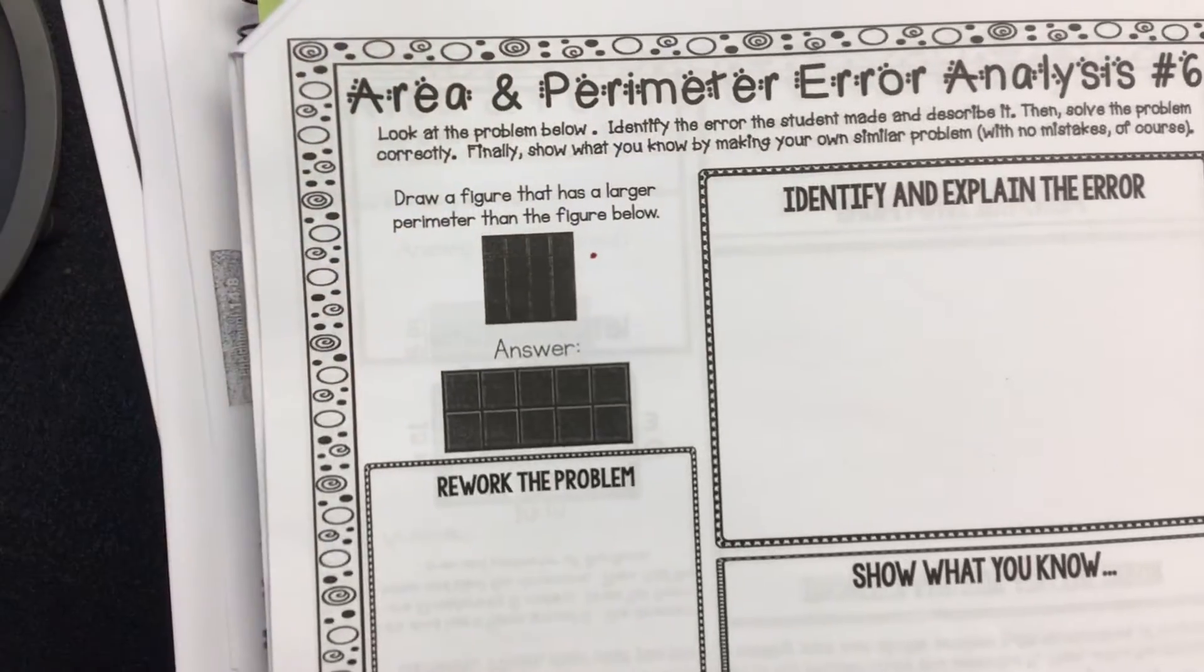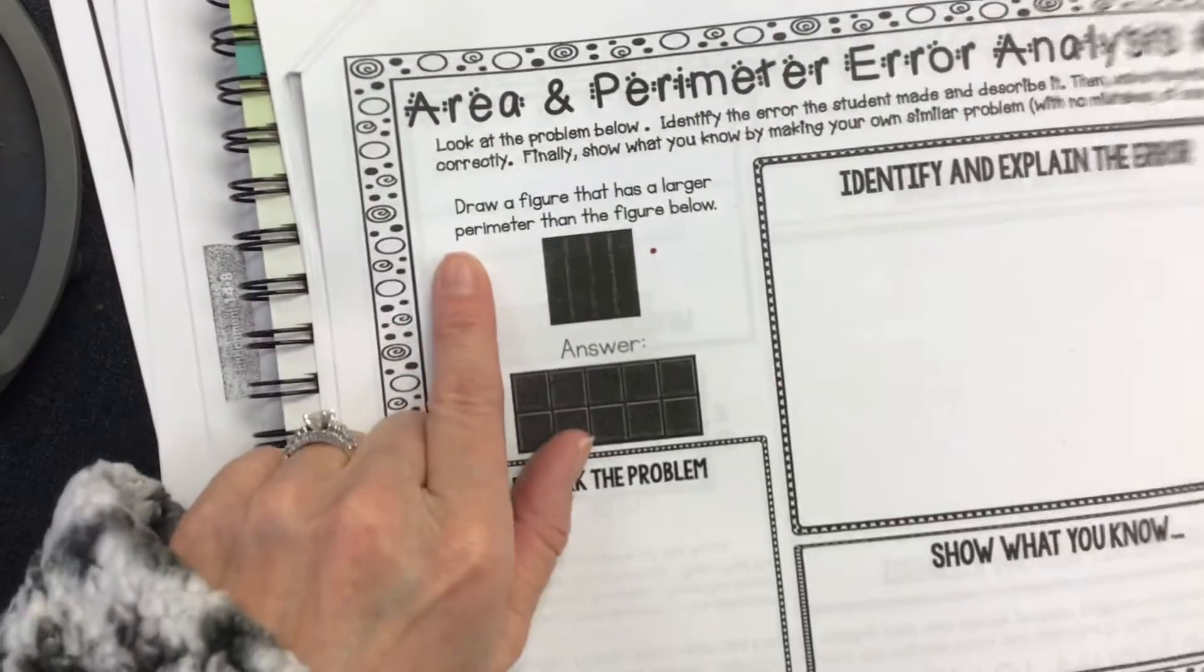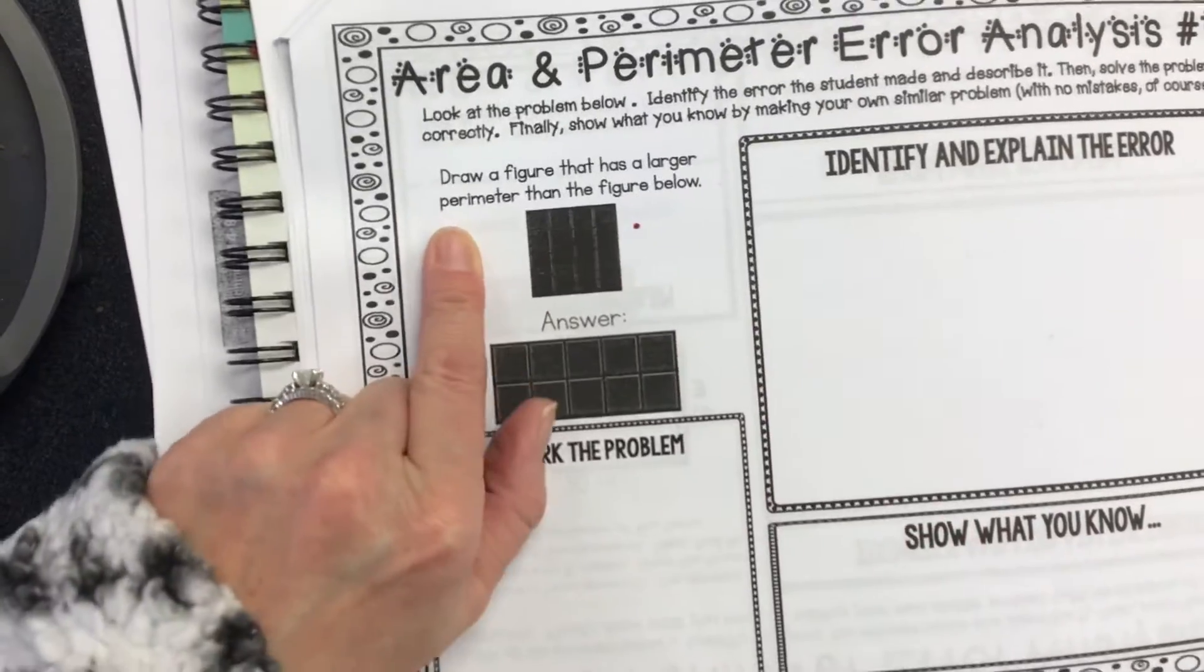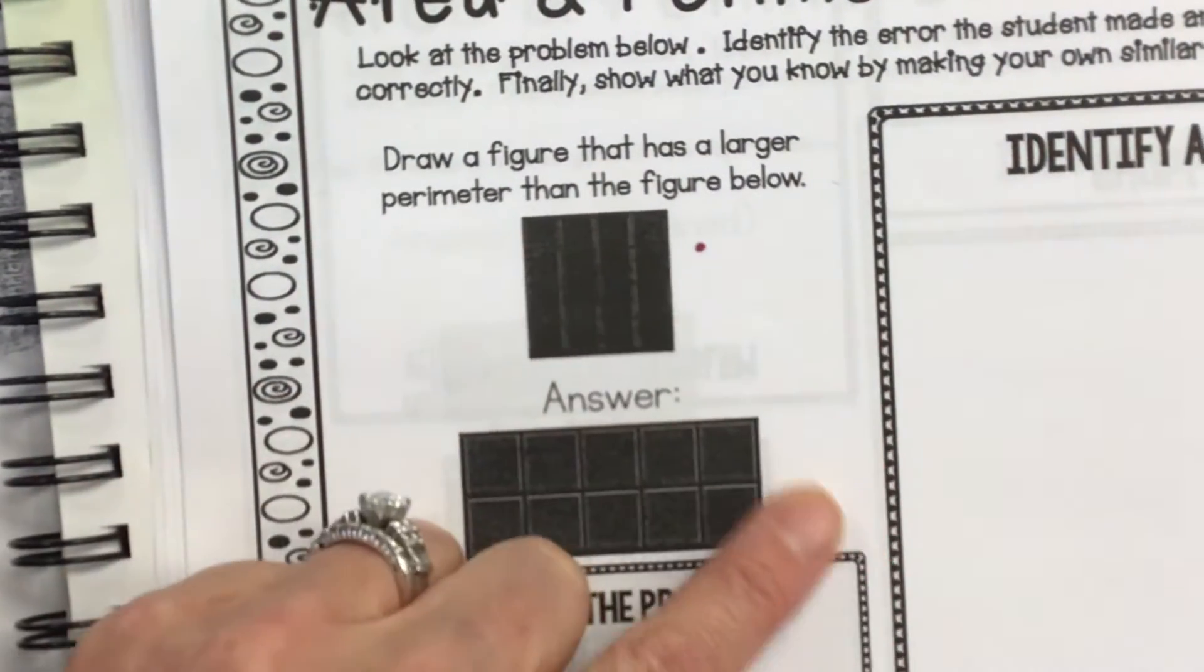Okay, I am looking at the area and perimeter error analysis packet. We're looking at number six.